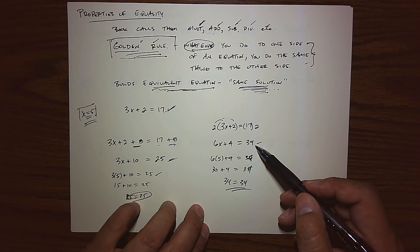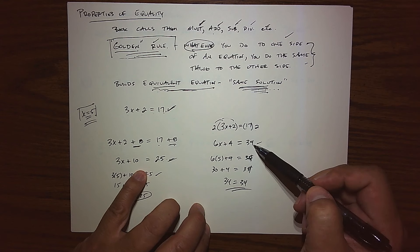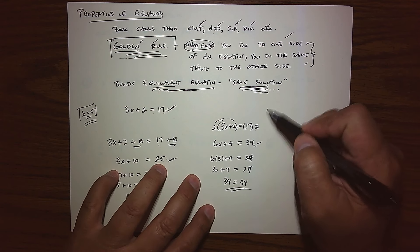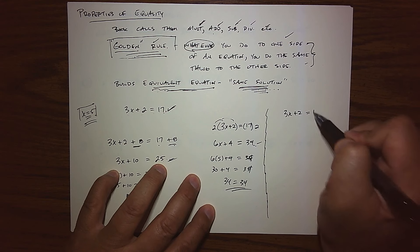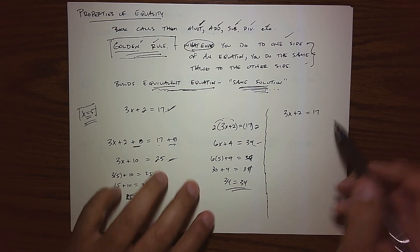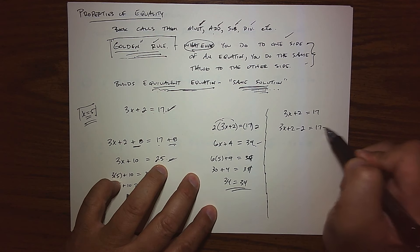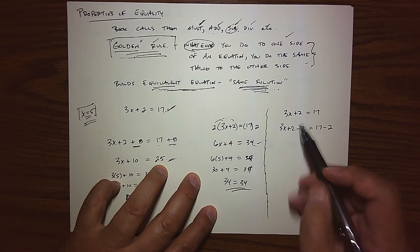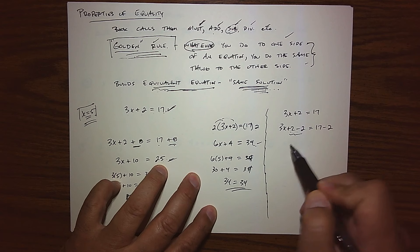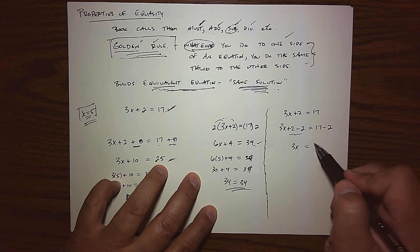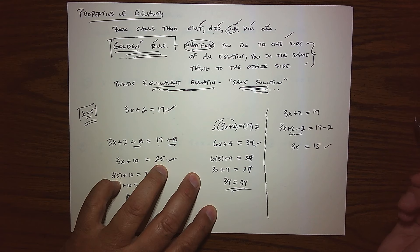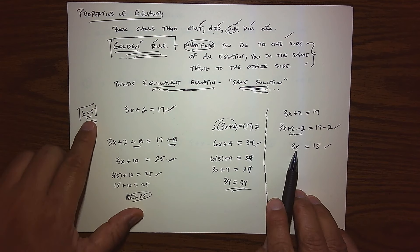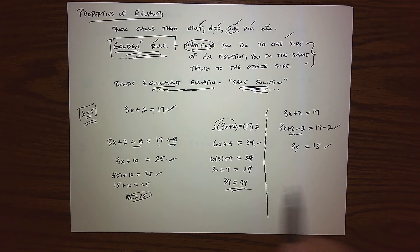Now, what we actually want to do is use the golden rule not to make the equation more complicated, but to make our equivalent equation look simpler. A better move is to take both sides and subtract 2. Why subtract 2? Because when we combine like terms, the 2 and negative 2 cancel to 0, leaving us with 3x on the left, and 17 minus 2 is 15 on the right. So we get 3x equals 15 — a much simpler equivalent equation. It's easy to check that x equals 5 is the solution: 3 times 5 is 15.